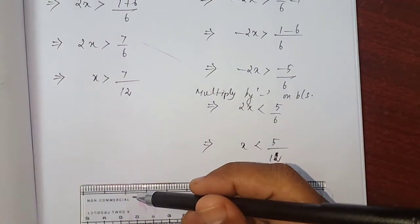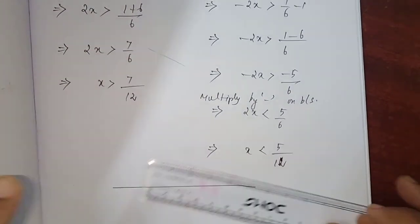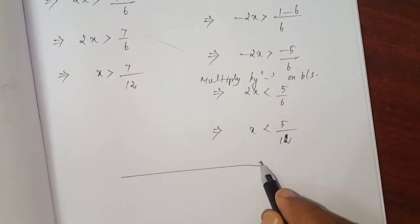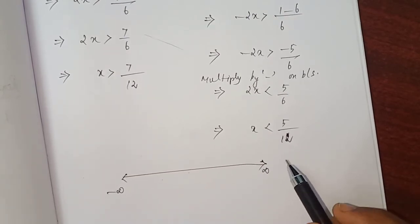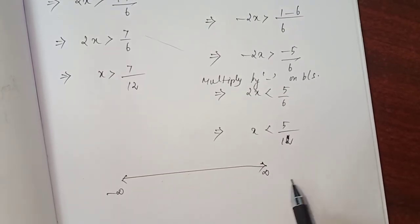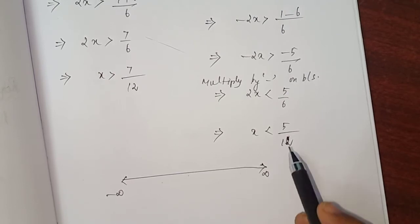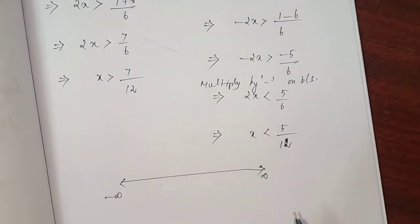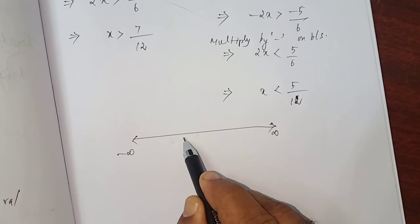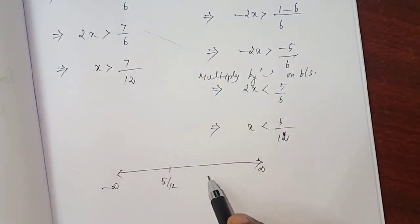Number line. Here minus infinity, plus infinity. So, real line starting one minus infinity and the ending one is plus infinity. We have two numbers: 5 by 12 and 7 by 12. First, write 5 by 12 and you have to write 7 by 12.